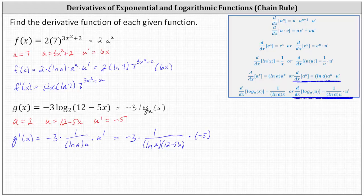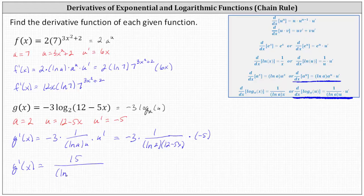Let's go ahead and simplify. Negative three times negative five is positive 15. So G prime of x equals 15 divided by the product of natural log two and the quantity 12 minus five x. I hope you found this helpful.